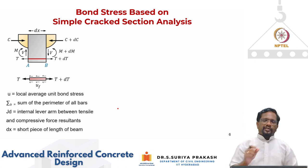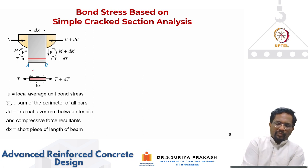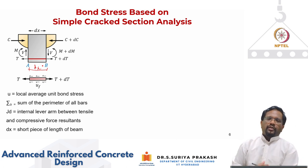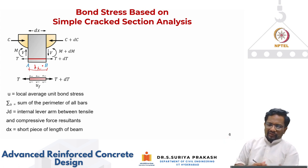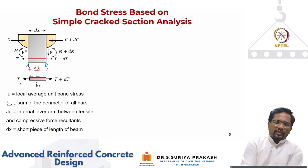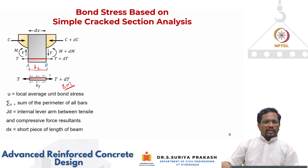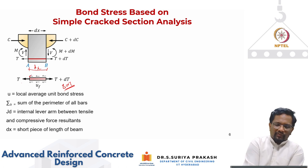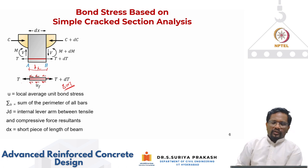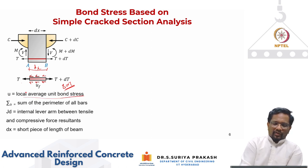Let us develop the relationship between shear in the cross section and bond. Taking the same cross section between A and B at distance dx: on the left side, moment is M; on the right side, it is M plus dM, with shear remaining constant. Looking at only the bar, on the left side tension is T, on the right side T plus dT. For the bar to be in equilibrium, bond stresses u — the local average bond stress — develop at the interface.